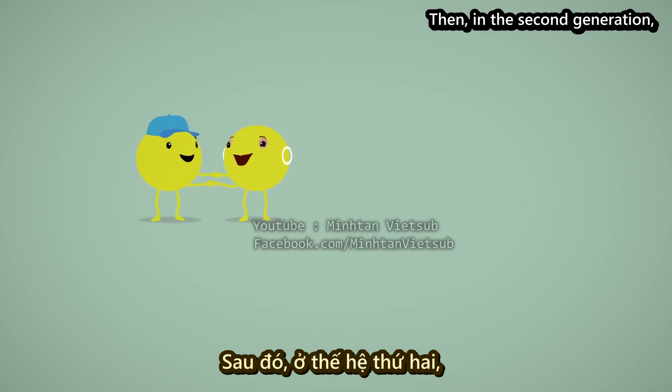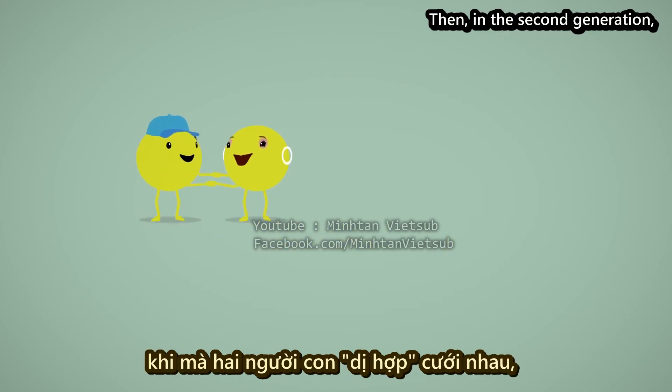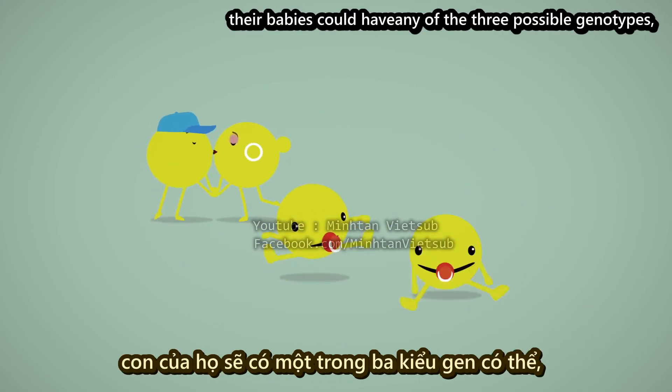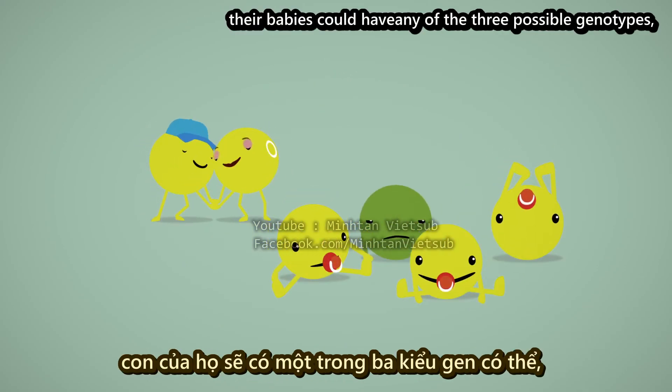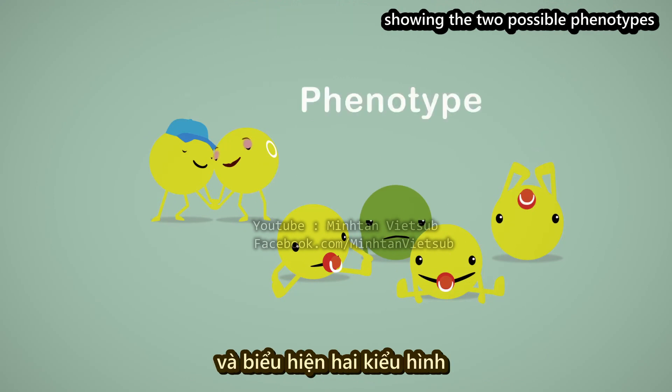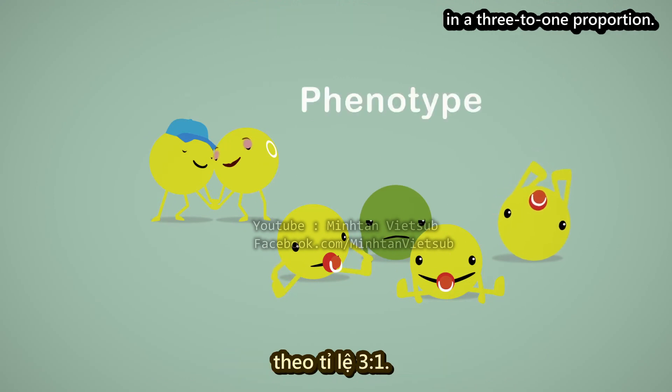Then, in the second generation, where the two heterozygous kids marry, their babies could have any of the three possible genotypes, showing the two possible phenotypes in a three to one proportion.